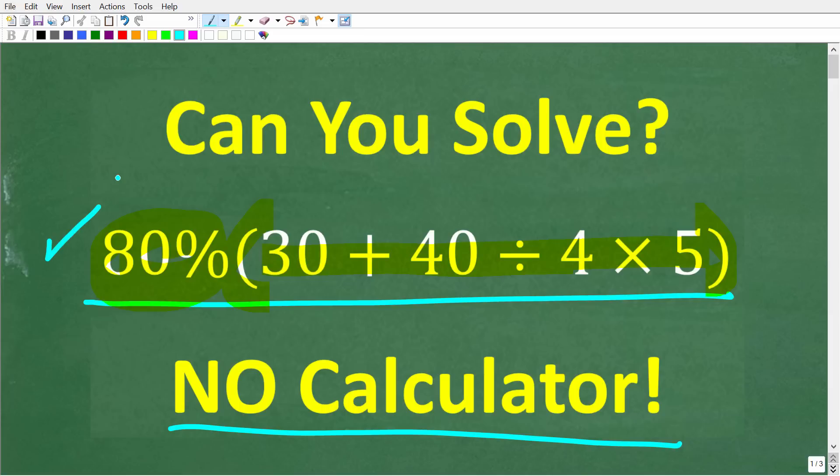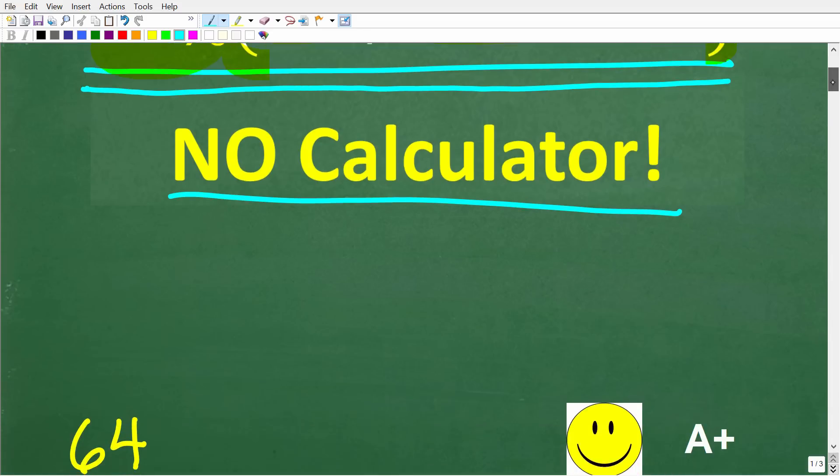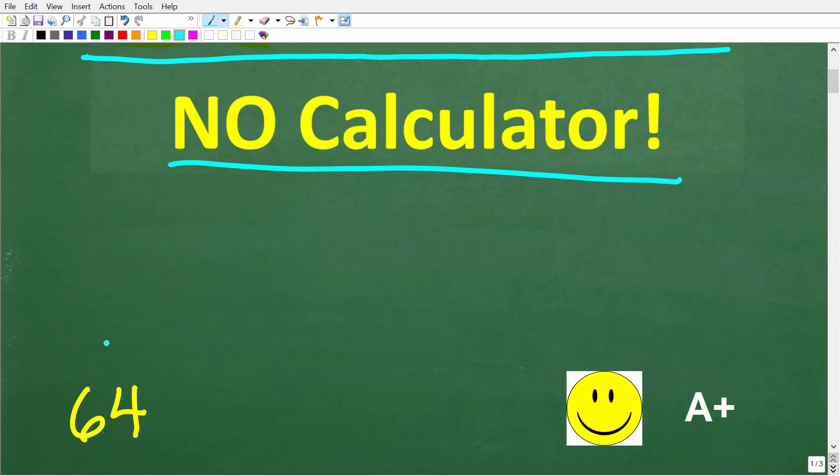I'm going to show you the correct solution in just one second. Then, of course, I'm going to solve this problem step by step. One more time, 80% of 30 plus 40 divided by 4 times 5. Let's take a look at the solution. The correct answer here is 64.